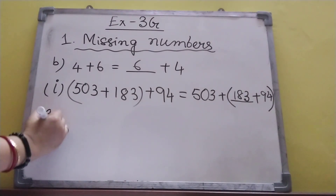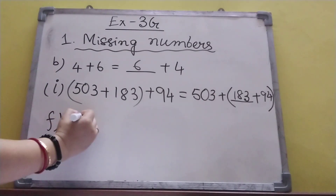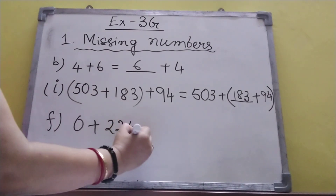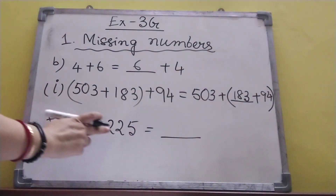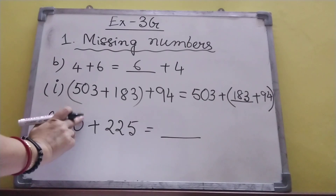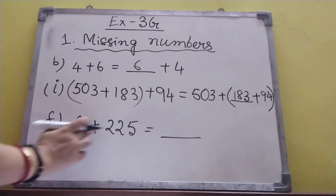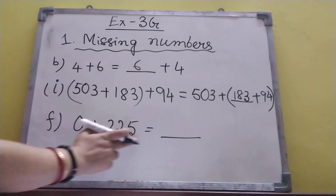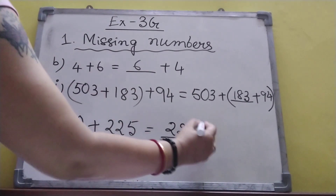Now F: zero plus two hundred and twenty-five is equal to dash. Any number — if zero is adding with any number, the result will be that number itself. That is two hundred and twenty-five. This is zero property.